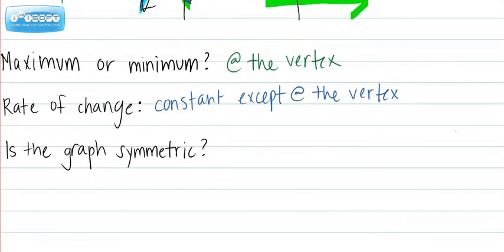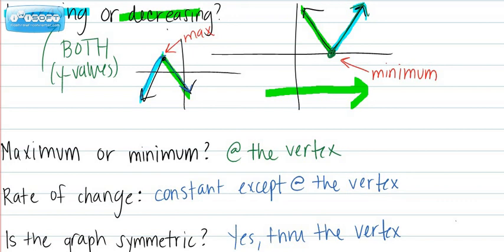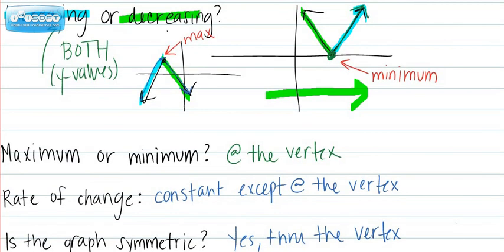And is the graph symmetric? The answer would be yes through the vertex. So if I were to go up to these graphs again, if I were to draw a line directly through the vertex, the graph would be exactly the same on either side. I could fold the paper in half through the yellow line and get the same graph.